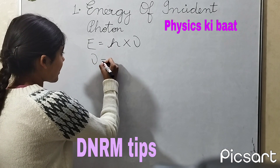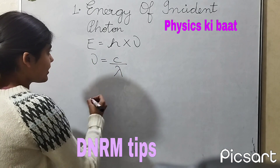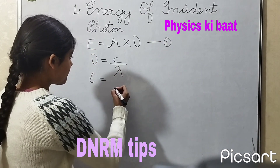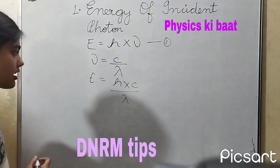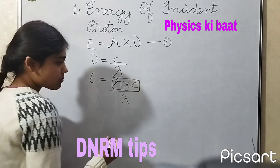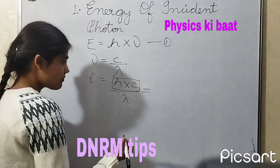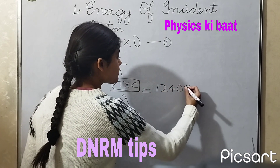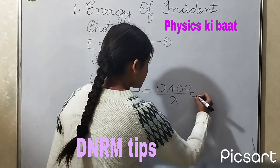We also know that frequency can be written as the speed of light divided by the wavelength. Therefore, equation 1 can be written as E = Planck's constant × speed of light divided by the wavelength. Now, to calculate this product — that is Planck's constant into speed of light — is a very tedious process. Hence, to save time, we can easily write it as 12400 divided by the wavelength, and the energy comes out in electron volts.